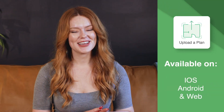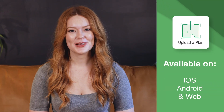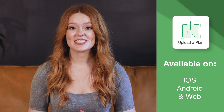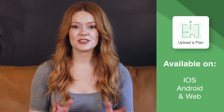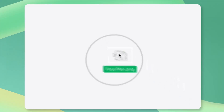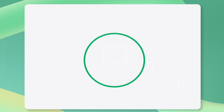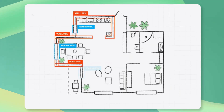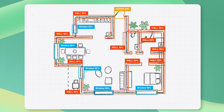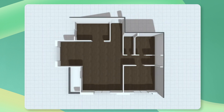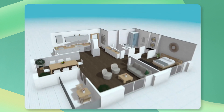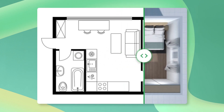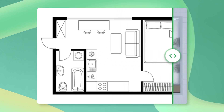Last but certainly not least, we have the Upload a Plan feature. This is really cool because it allows you to upload your existing floor plans and turn them into interactive 3D models. All you have to do is upload an architectural or blueprint-like image, and the AI will create a detailed 3D representation. Then you can customize and furnish it to your liking. Upload a Plan is perfect for those who have a clear vision and want to bring it to life in 3D.